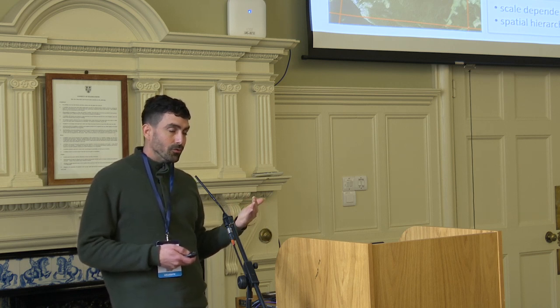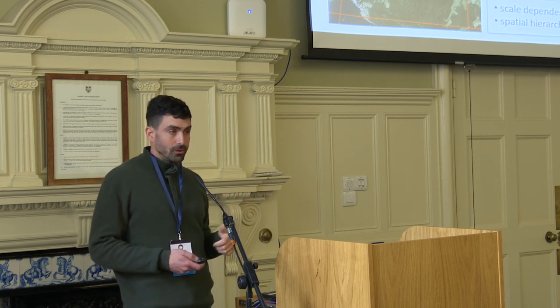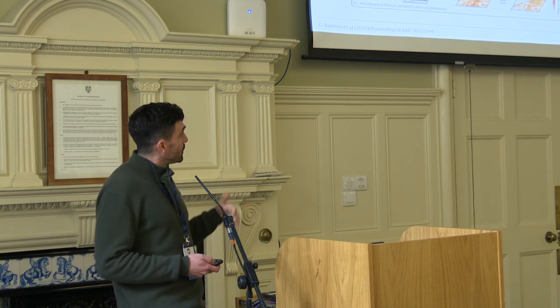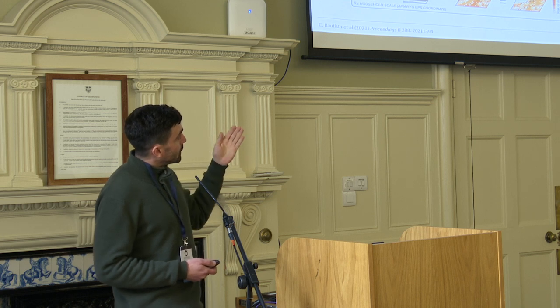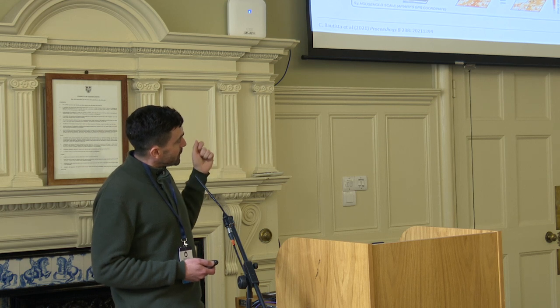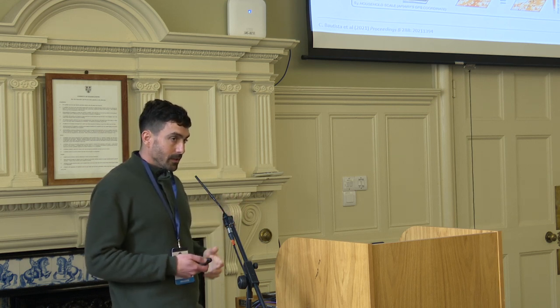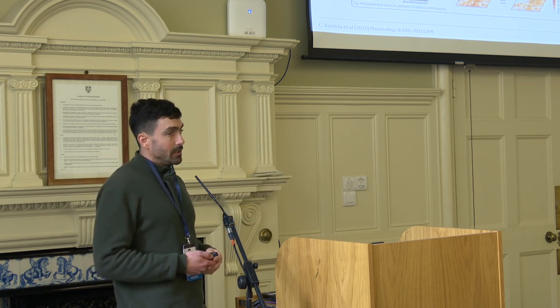Risk mapping is generally done at one given scale resolution. To overcome this problem, we designed a multi-scale modeling framework where we propose to model the risk of damage at three different scales based on scale-specific hypotheses, then produce a predicted risk map at each scale and integrate these risk maps at the finer resolution to produce what we call a scale-integrated risk map.